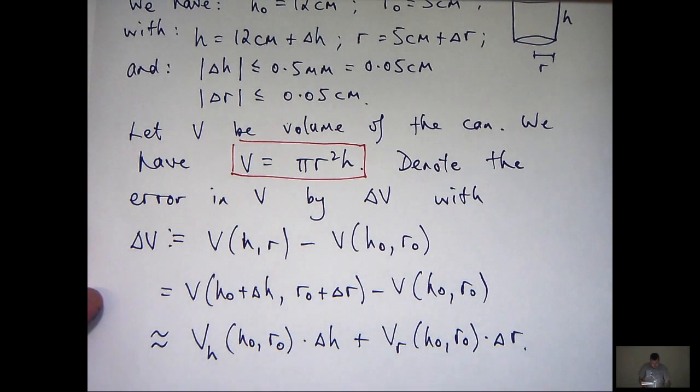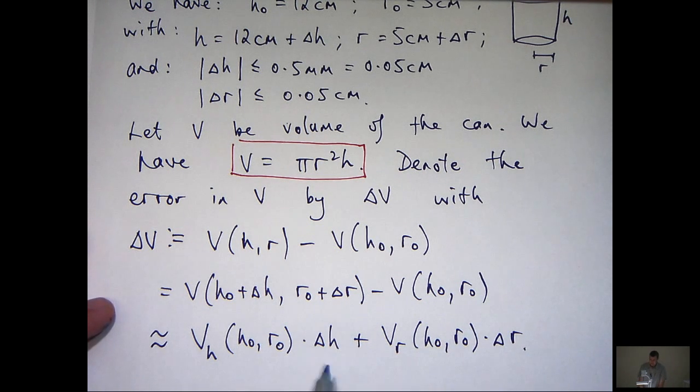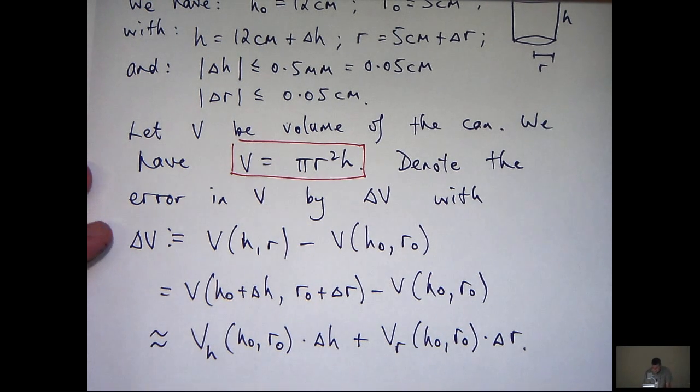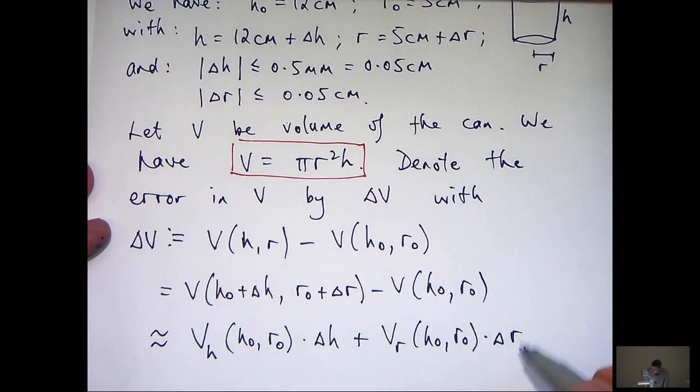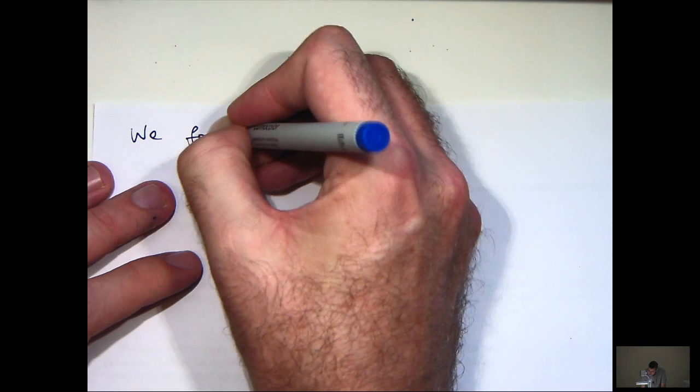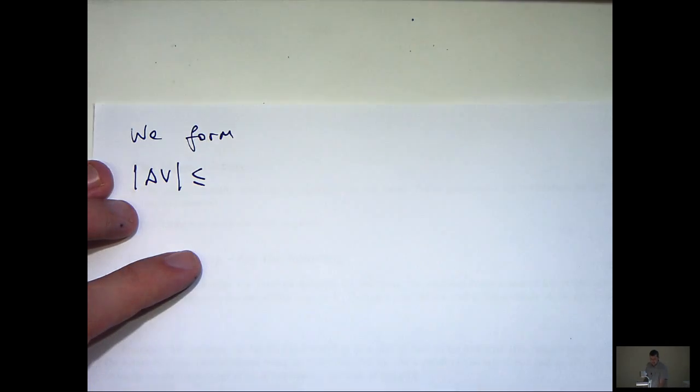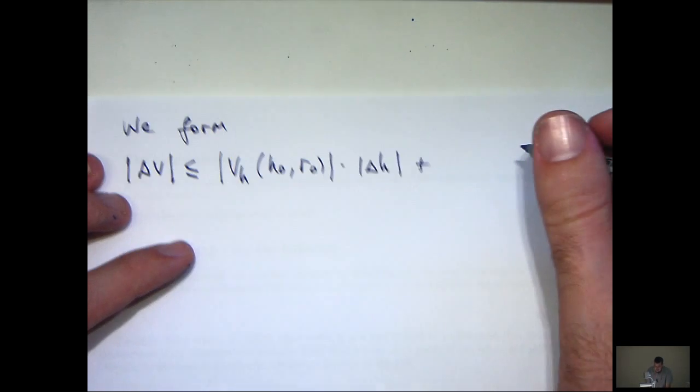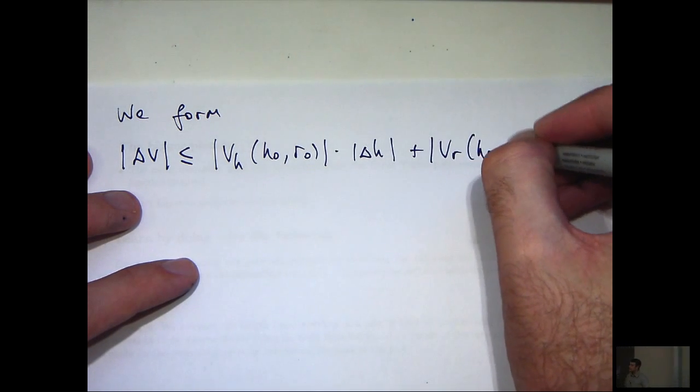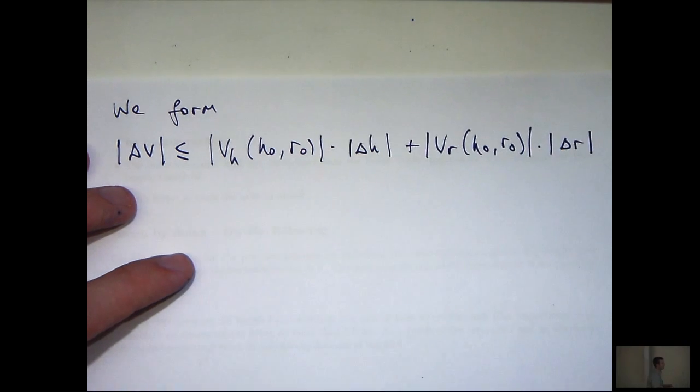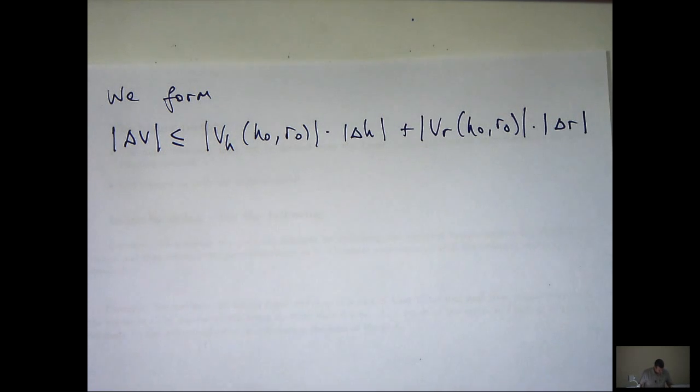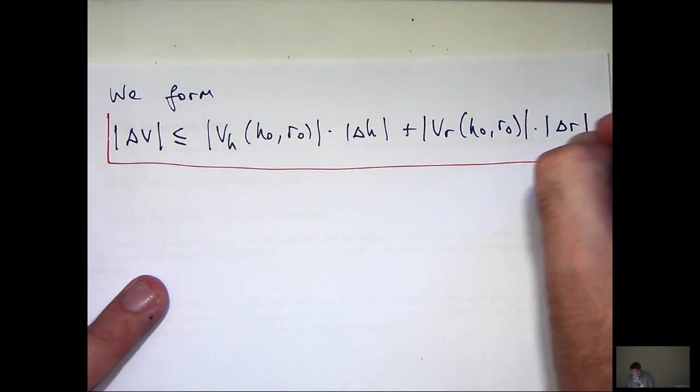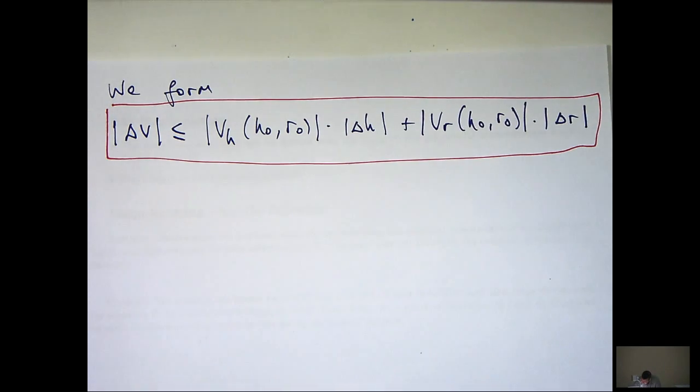So what we can do now is, we don't know what these are, but we do have estimates on them. So I can take absolute values here and here and form an inequality. If I take absolute values there and there and then use what's known as the triangle inequality, I obtain the following. This is a very important inequality, the most important inequality here. I've shown you how to obtain it from the basic linear approximation setup.